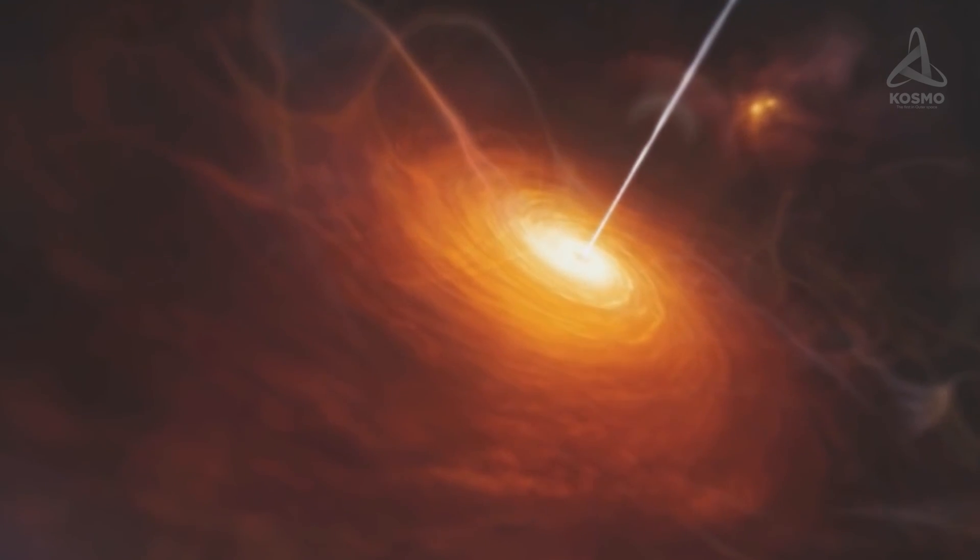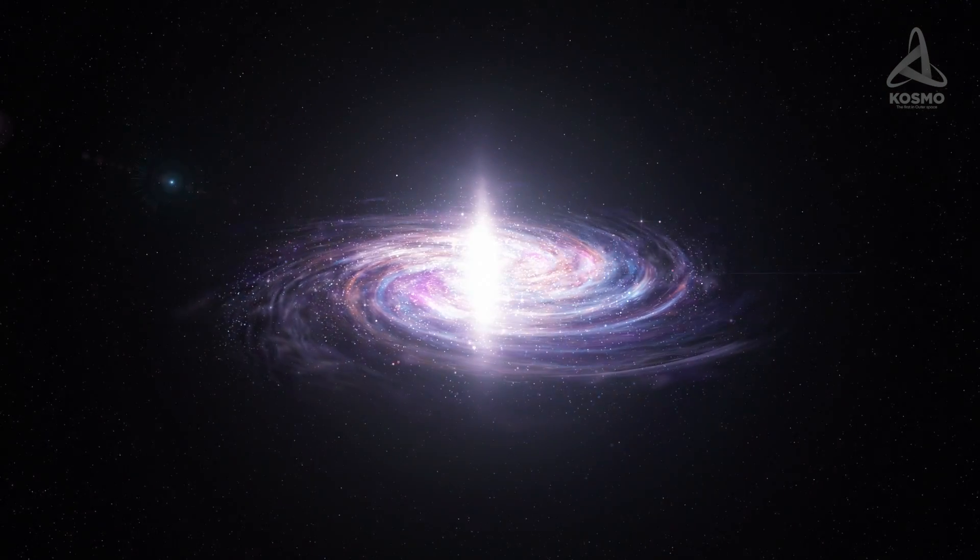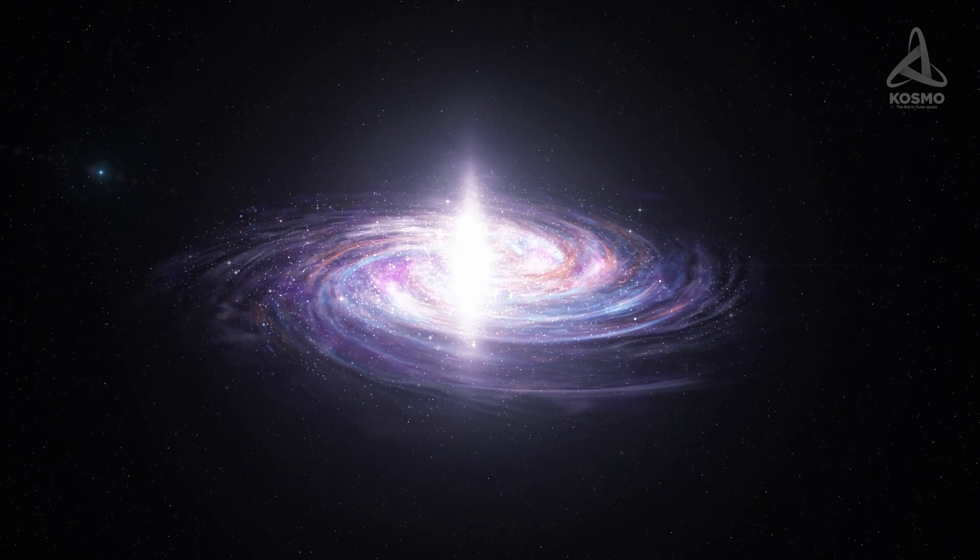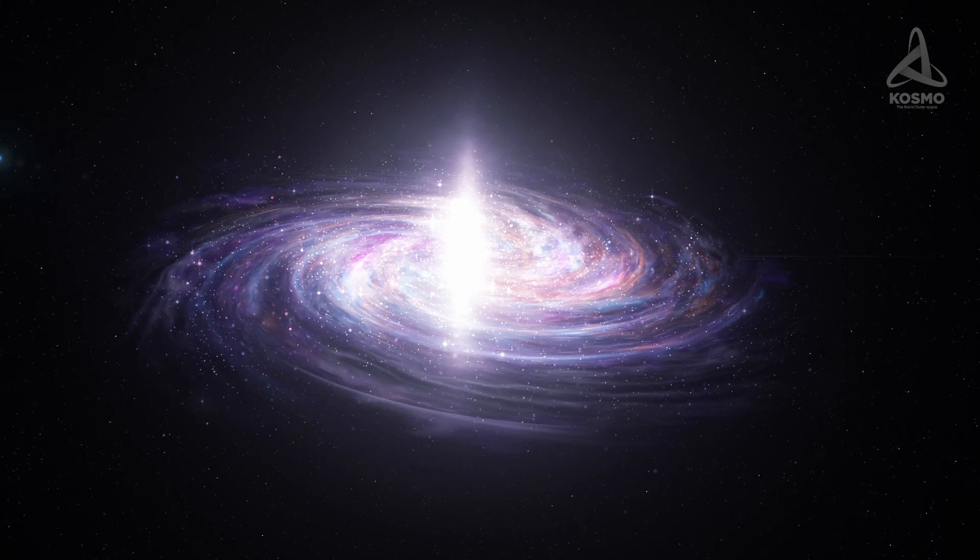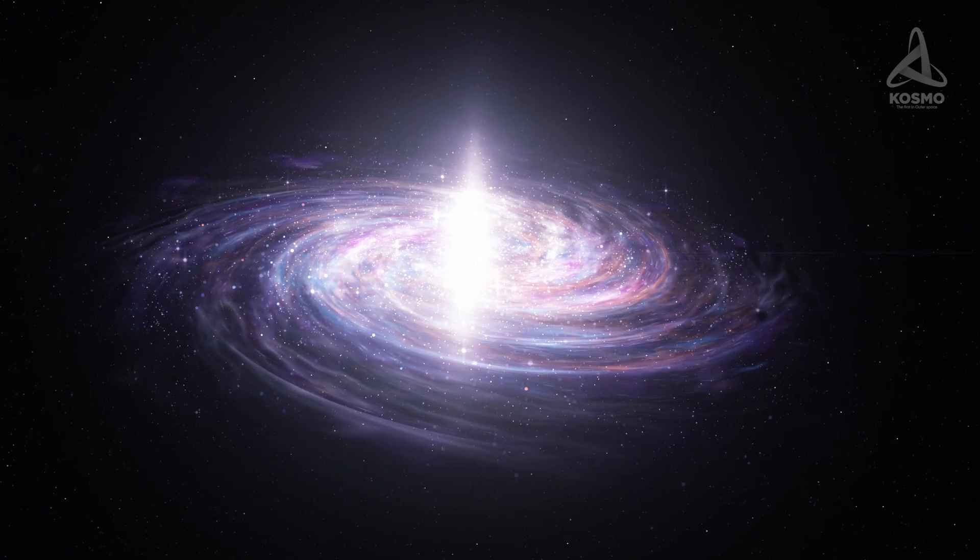A regular quasar is an astronomical body boasting the highest luminosity among other objects in the observable universe. According to contemporary scientific views, these celestial bodies are active cores of galaxies where a supermassive black hole sucks in matter all around it, thus forming an accretion disk.